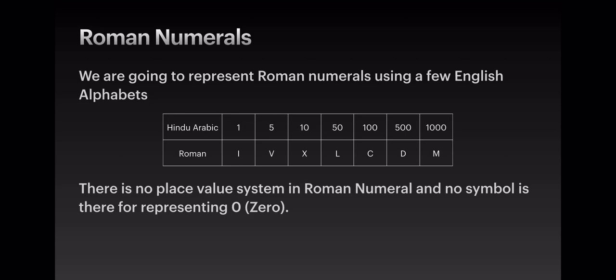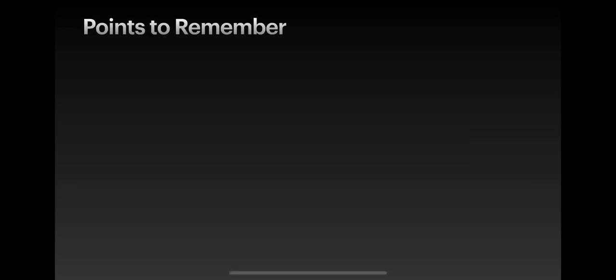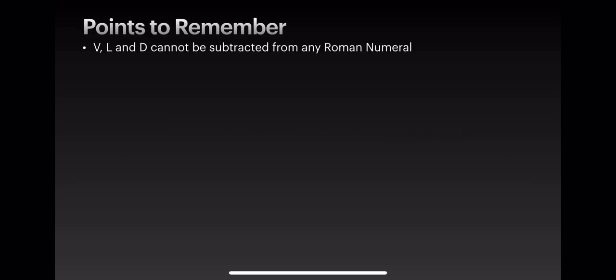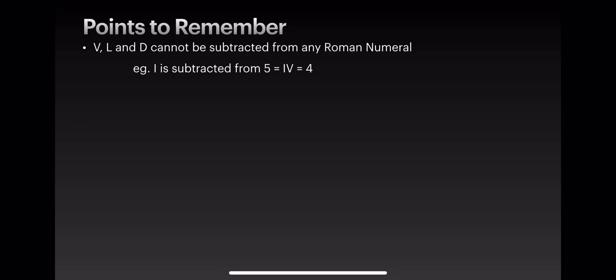Points to remember: V, L, and D cannot be subtracted from any Roman number. For example, 5 minus 1 is 4 — in Roman numbers, the number to be subtracted has to be written on the left and the higher value number on the right, so 5 minus 1 is IV, which equals 4.